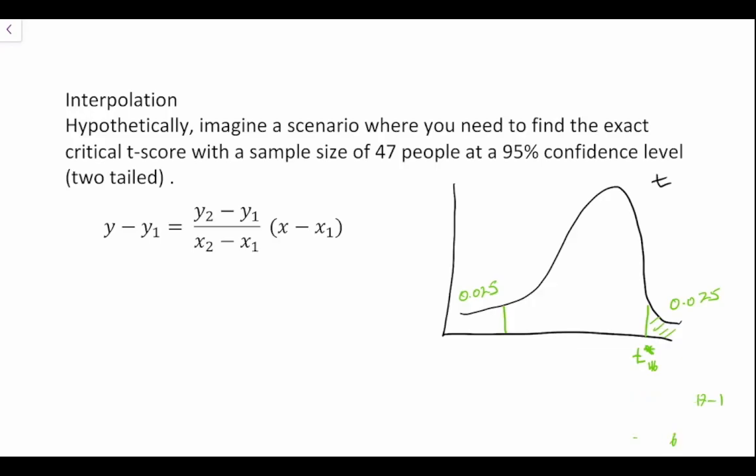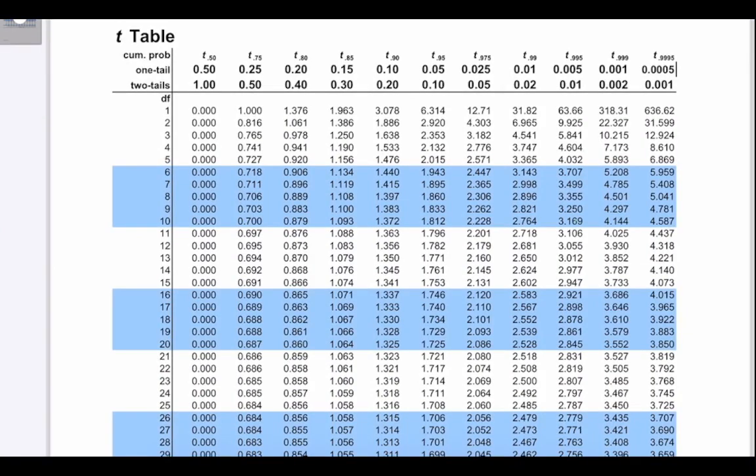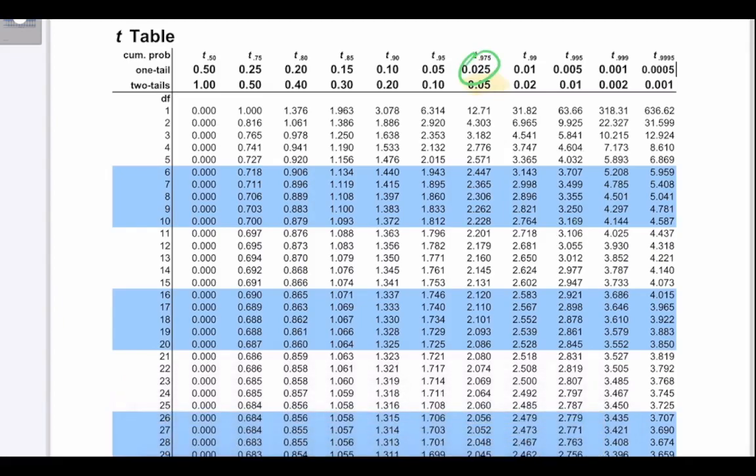So we're looking up our t at 46 degrees of freedom, but when we look at our t-chart, first we look for our cumulative probability. We're looking at two tails at 95%, so that would mean that in each tail we have 0.025, so that's great.